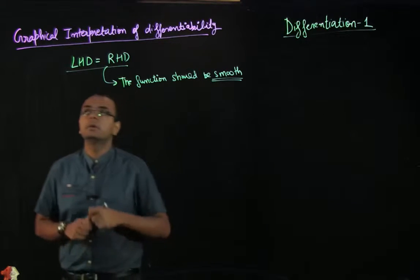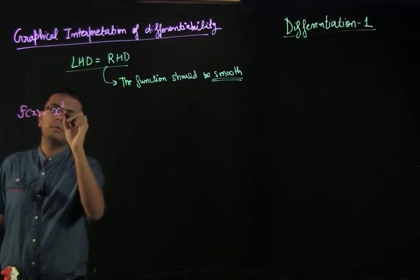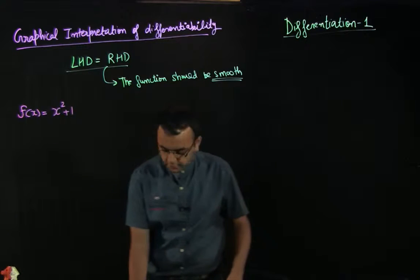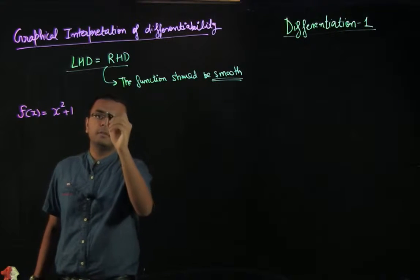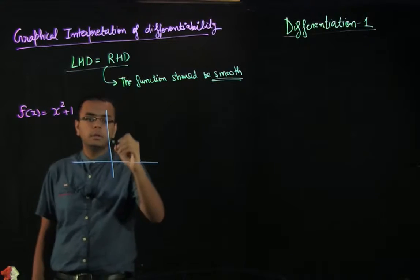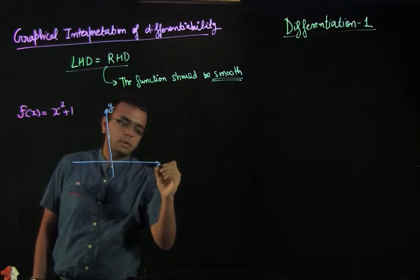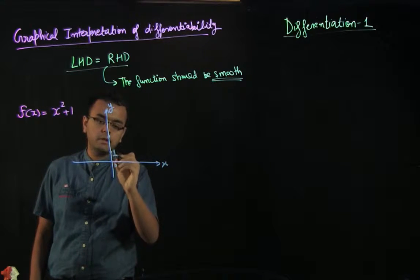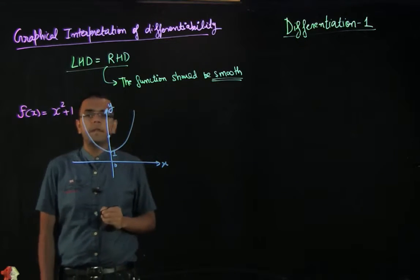Let us take an example to understand this. Let's say f(x) is equal to x² + 1. This function is a quadratic function and I hope you remember from the chapter of functions how to sketch the graph. At x equal to 0, the function value is 1, and then it is a quadratic curve like this.